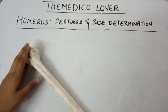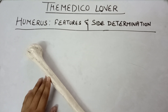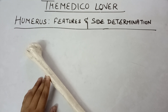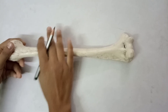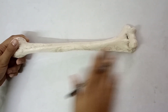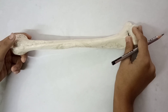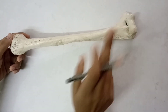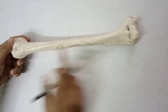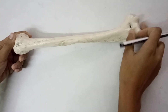Hello everyone, welcome to my channel The Medico Lover. Today we will be learning about the humerus, its features and its side determination. The humerus is the bone of the arm and it is the longest bone of the upper limb. The humerus is divided into basically three parts: the upper end, the shaft which is the middle part, and the lower end.